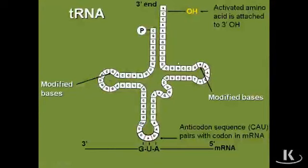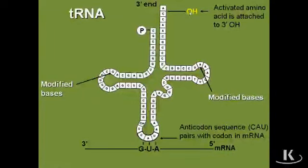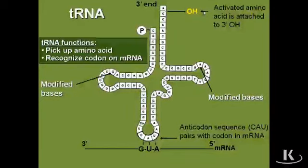There are three leaves to the clover. At the five prime end is a phosphate group, going all the way around to the three prime end where there is a hydroxyl group. In transfer RNA, it's to this three prime hydroxyl group to which the activated amino acid is going to be attached.